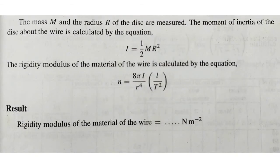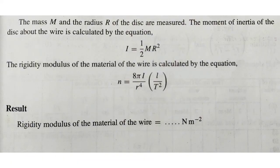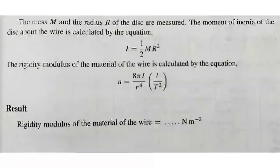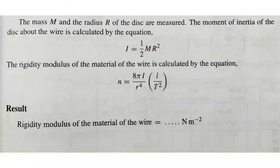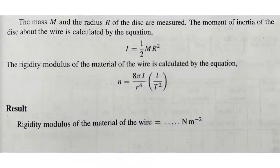The mass is M and the radius is R. The moment of inertia of the disk can be calculated using the equation I equals half M R squared. The rigidity modulus of the material of the wire can be calculated using the equation: n equals 8πI divided by r raised to the 4th, into L by T squared. Here, I is the moment of inertia, L by T squared relates to the tabular values, and r is the radius of the wire measured using the screw gauge.